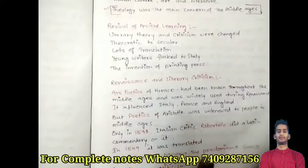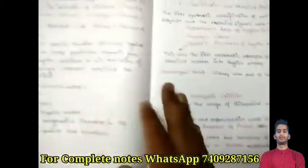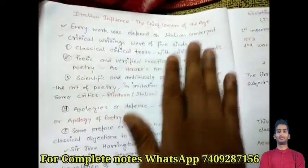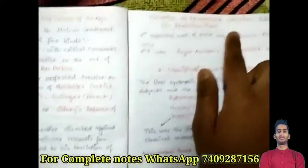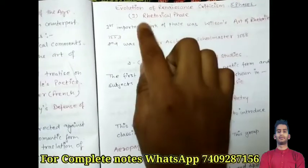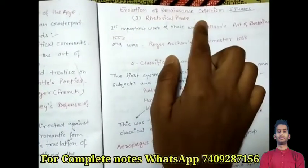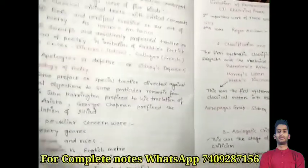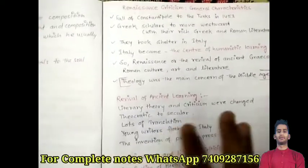We will also be doing discussion on Renaissance and literary criticism, and finally we will be talking about Italian influence and the chief concern of the age. You can also see the five main phases of evolution of Renaissance criticism. Here are all the topics. If you wish to join the complete course, you can contact me on WhatsApp.